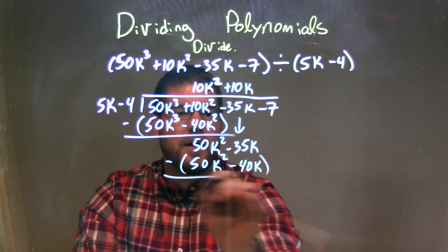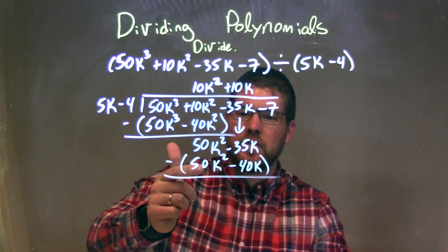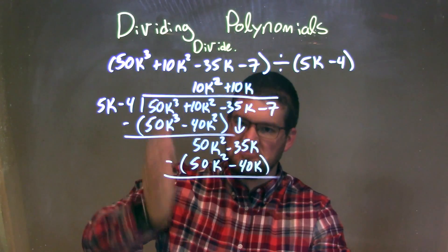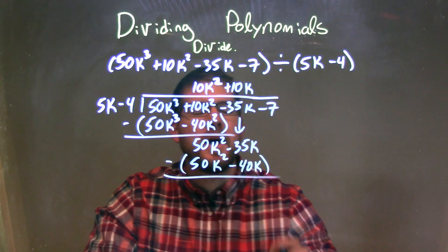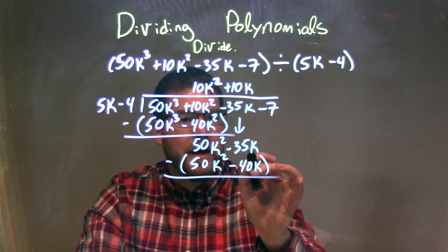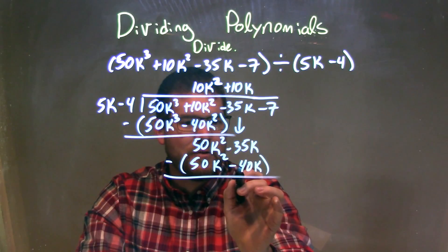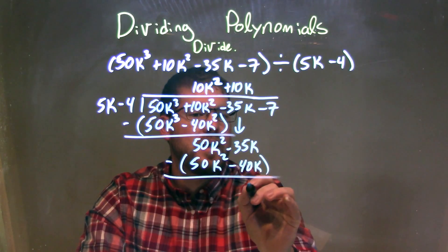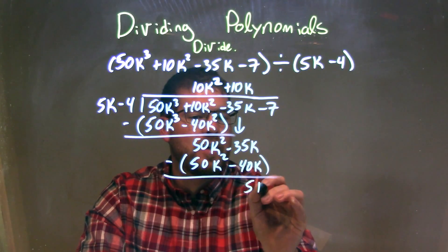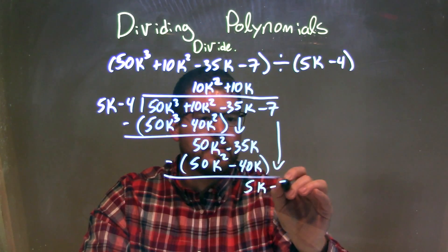We subtract the two at the top and the bottom. 50k² minus 50k² is just 0 — perfect, that's what we wanted. And minus 35k minus a negative 40k is like adding a positive 40k, giving us positive 5k. We bring down the minus 7.